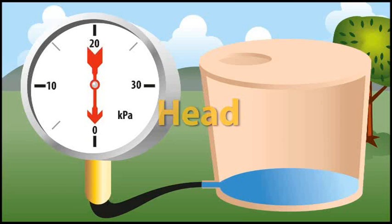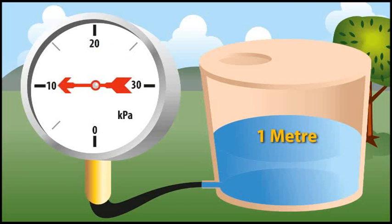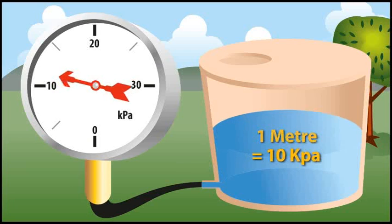In a tank where the water level was one meter higher than the outlet point, a pressure gauge would show 10 kPa of pressure, which is one meter of head. Every meter of water height equals one meter of head.